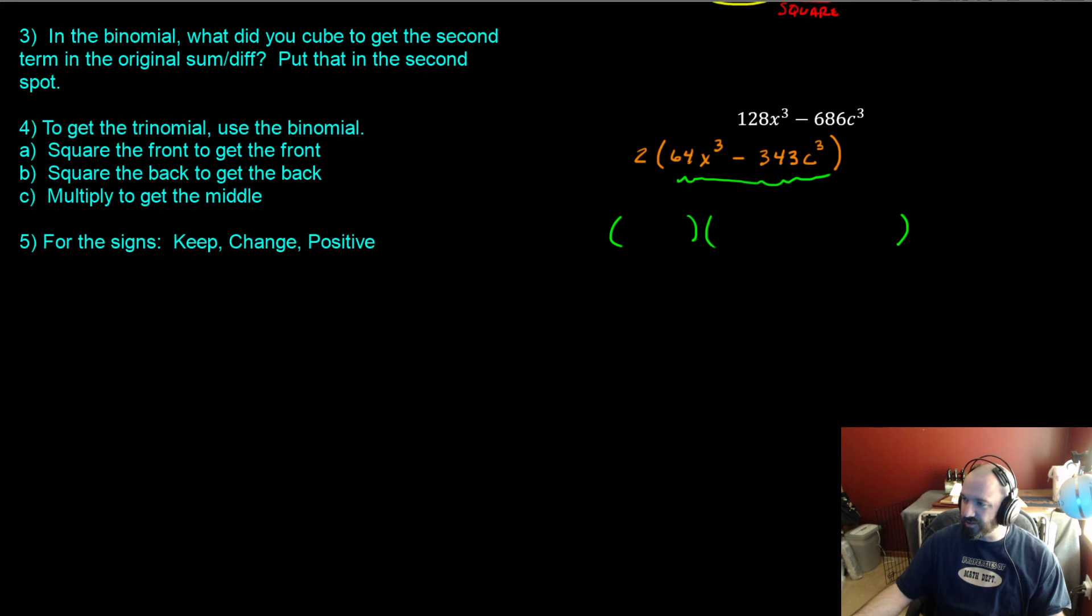So what did you cube to get 64? 4. What did you cube to get X cubed? X. What did you cube to get 343? It's 7. And then, what did you cube to get C cubed? C. Going through my little ditty here. Let's get a good color. Square the front to get the front. Square the back to get the back. Multiply to get the middle.